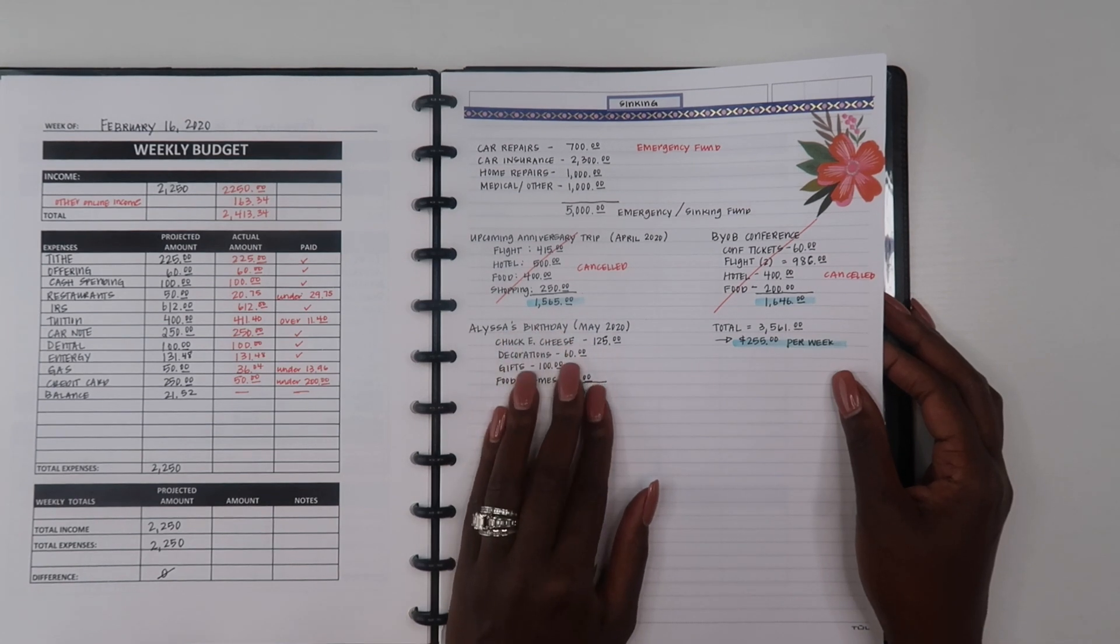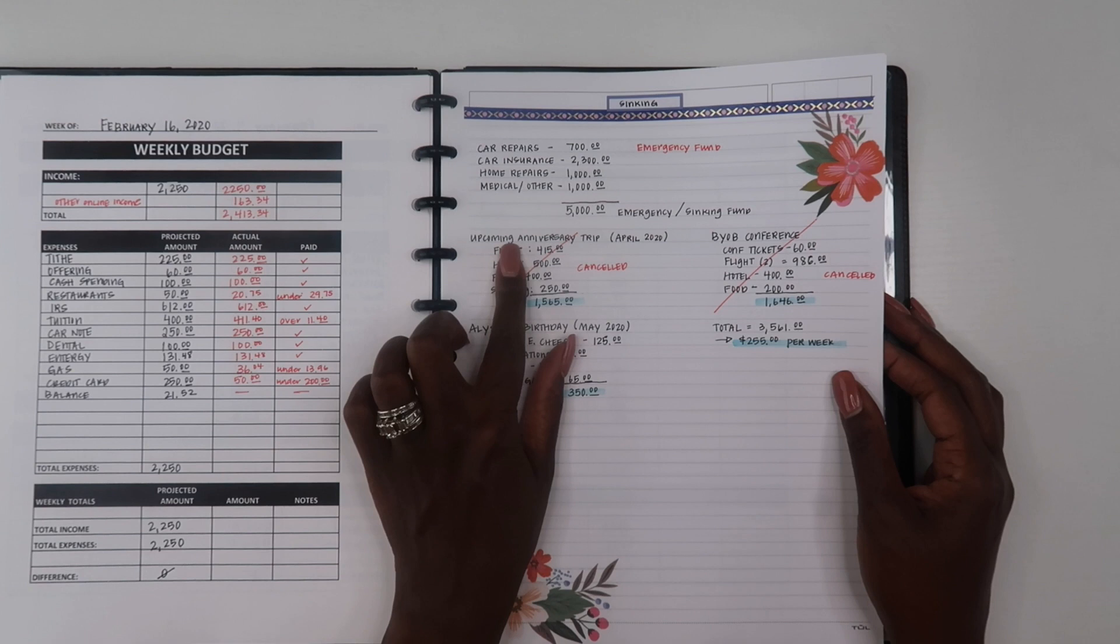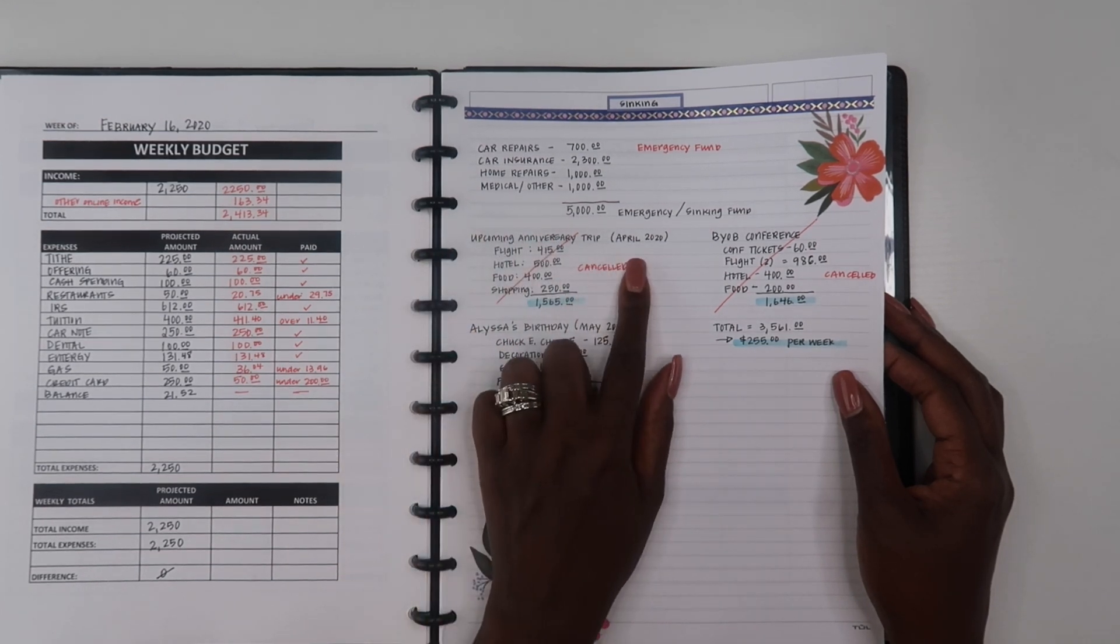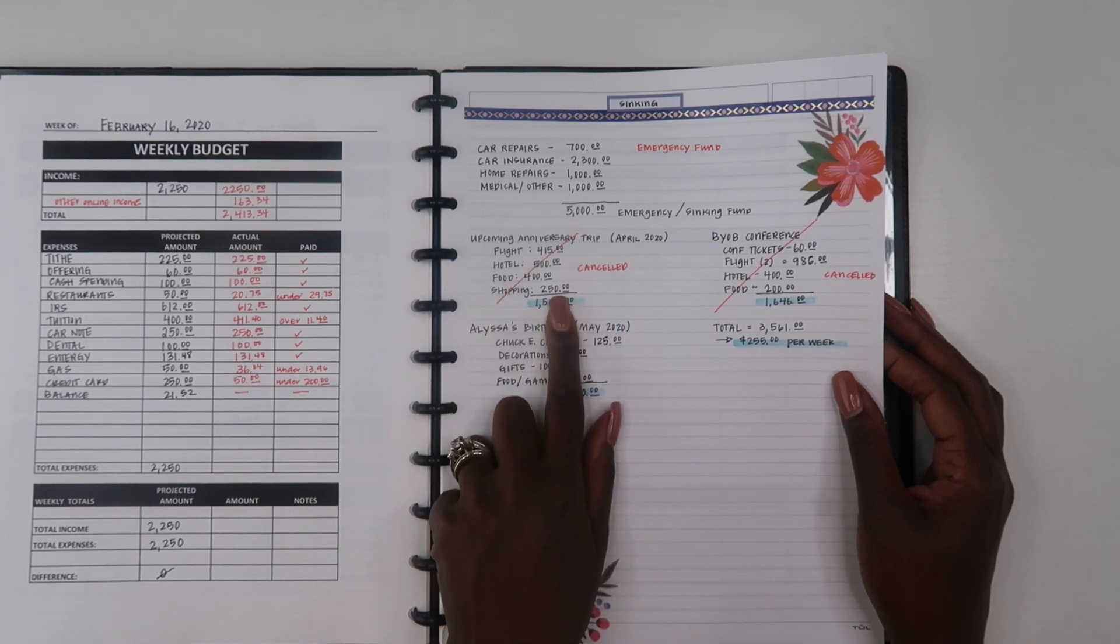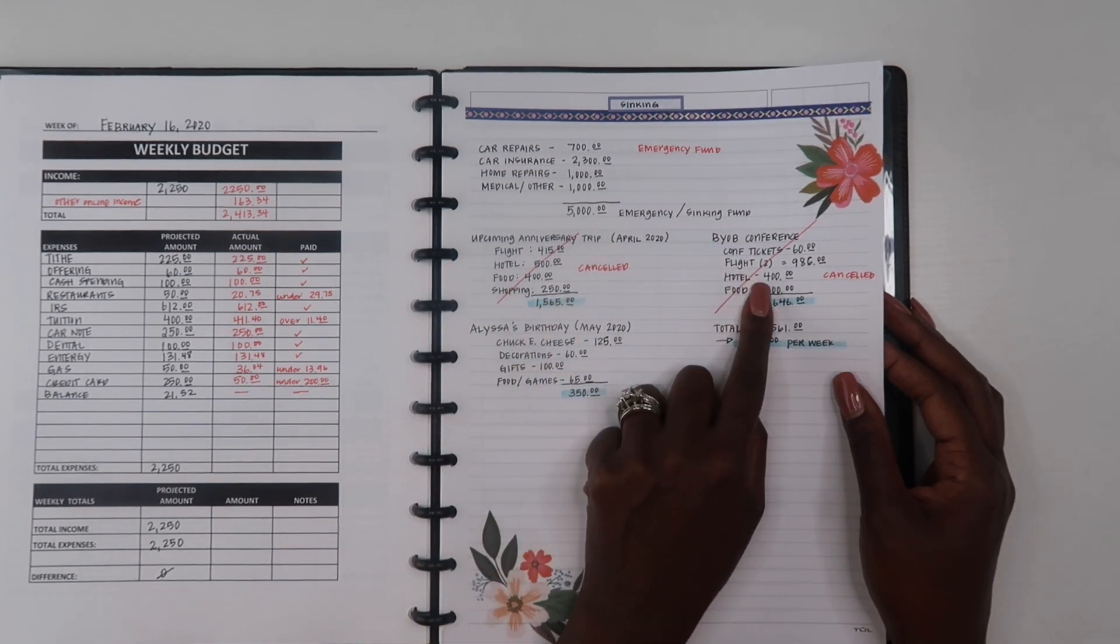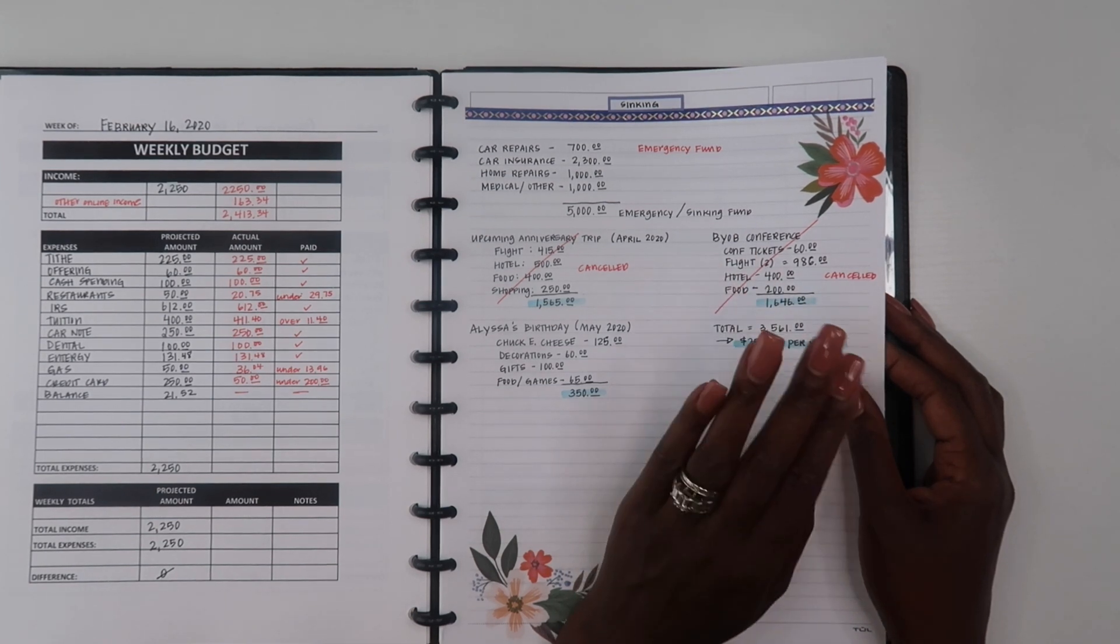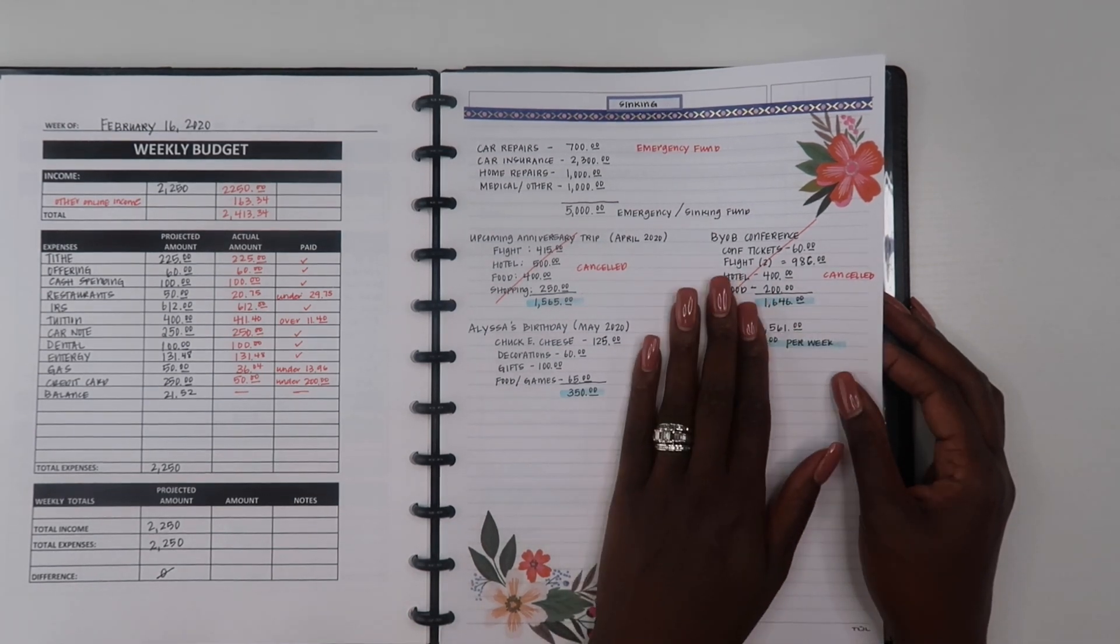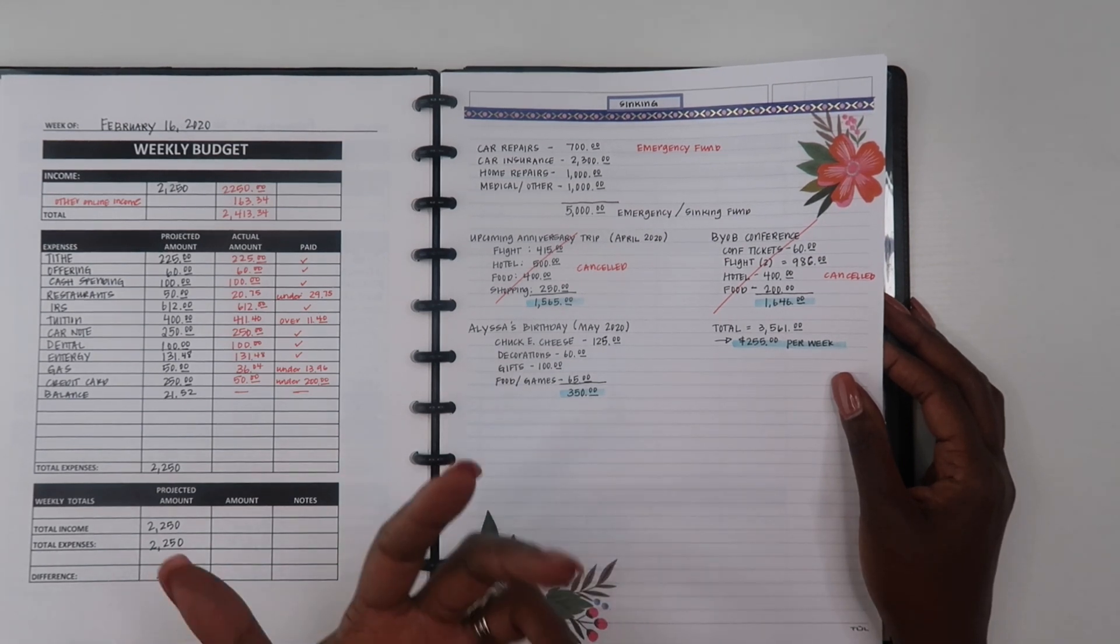Alyssa's birthday is still on here because I am just hoping that we will get past this by her birthday which is May 6th. But the upcoming anniversary trip that was in April, April 16th through the 19th, we did cancel that. It was a trip to Chicago and the BYOB conference I really wanted to go, but I don't like to take money and put it aside for something unless I am really certain that we are going to be able to do it.